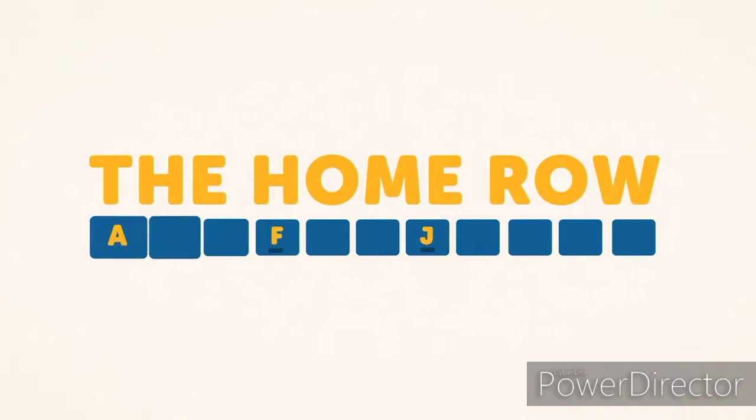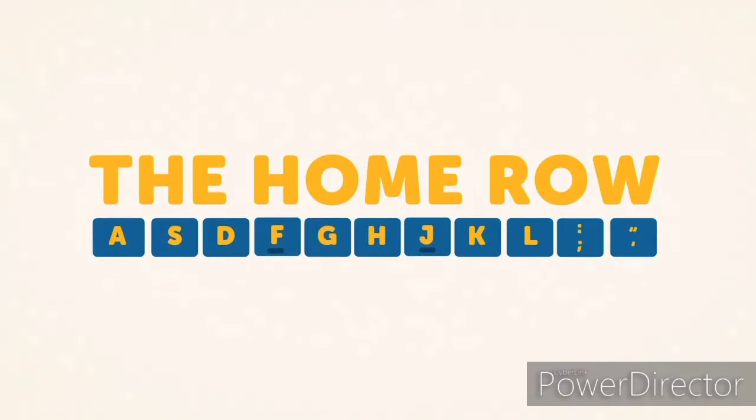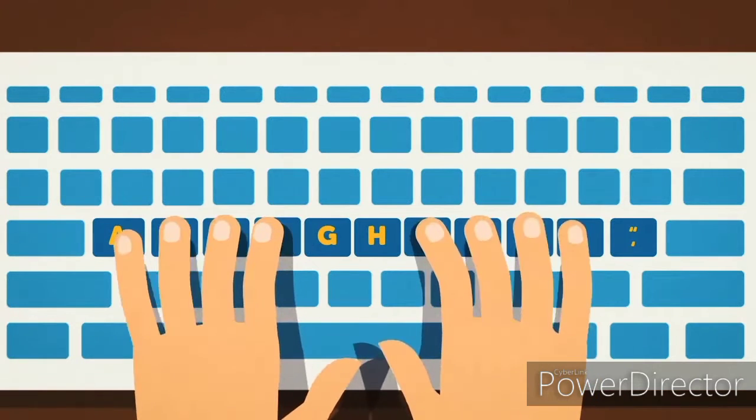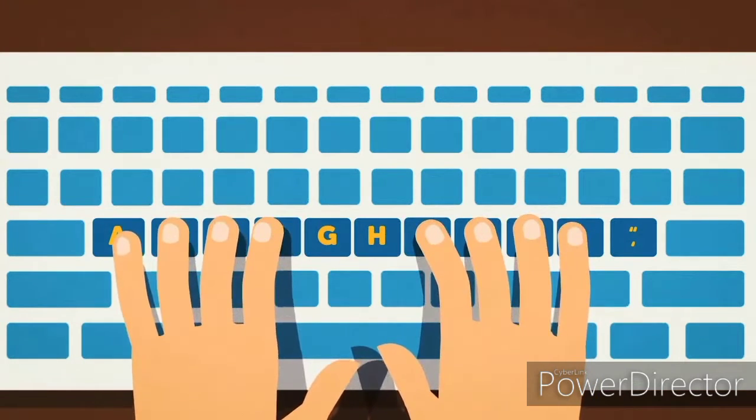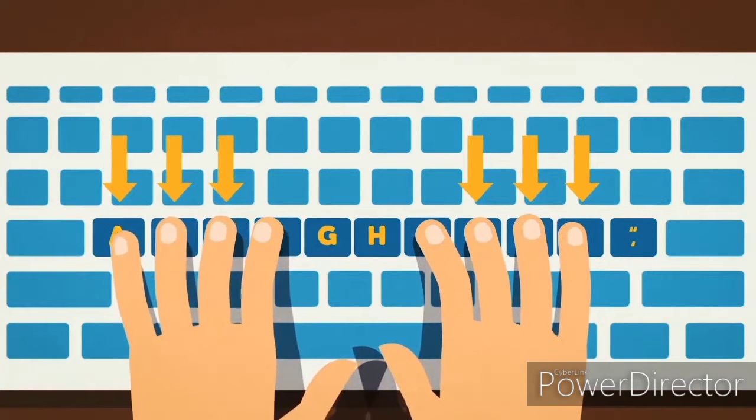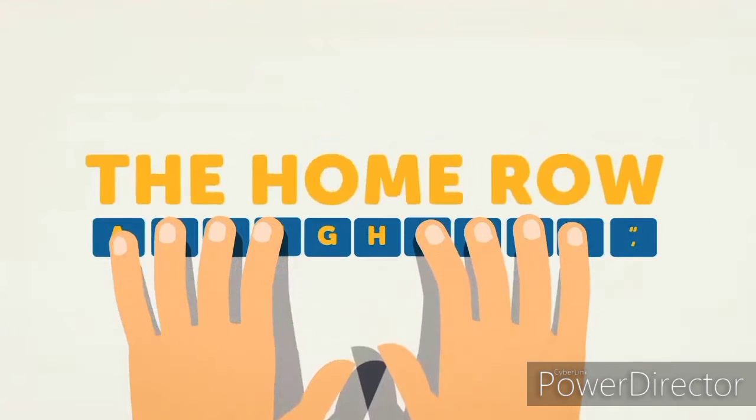Your fingers will always return to this row of keys whenever you aren't typing. With your index finger resting on the F and J keys, place your remaining fingers on the keyboard. You should feel them touching the three keys on either side of the F and J. Good job! Your fingers are officially in the home row position.